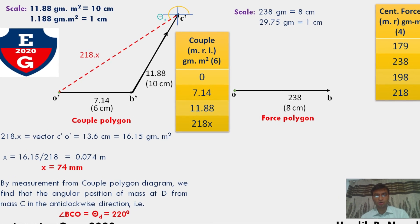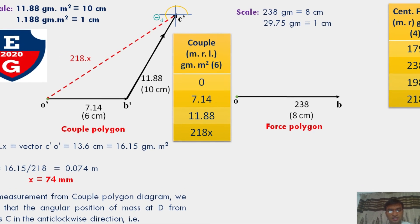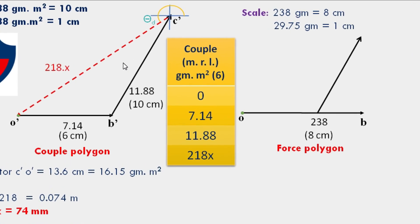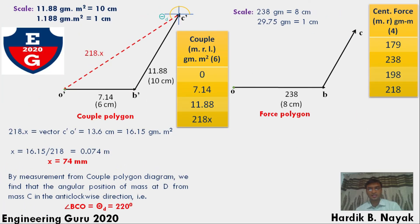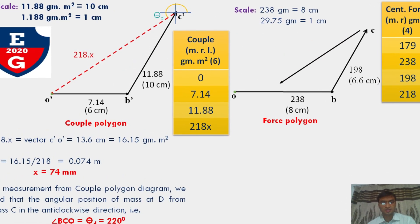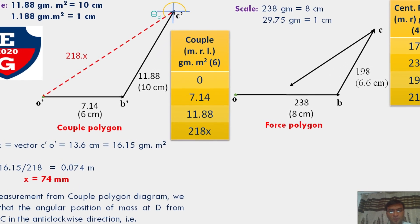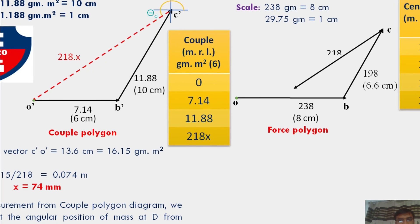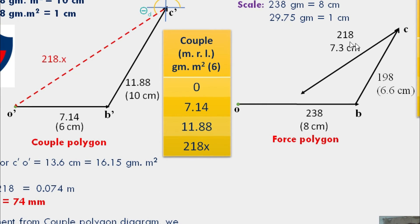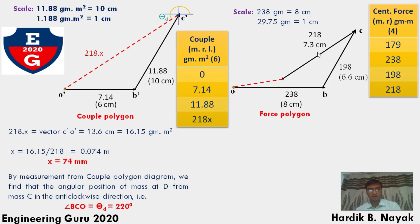Second, draw BC line. Draw this parallel line from couple diagram, and the length of BC equals 6.6 centimeter. Third, draw force vector line CD. This line is parallel from the couple polygon diagram. The line length of couple CD equals 7.3 centimeter. Now join simply point force line DO.